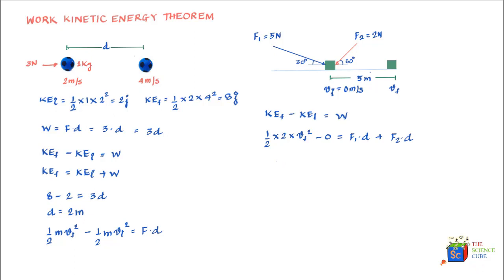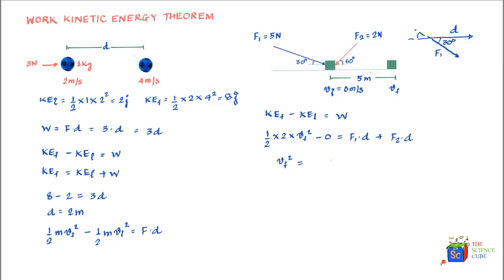The left side becomes V_f². For the right-hand side: F1 points in a direction making 30 degrees with the displacement d, so F1 · d = 5 × 5 × cos(30°). Force F2 acts at a direction such that the angle between F2 and the displacement is 120 degrees.